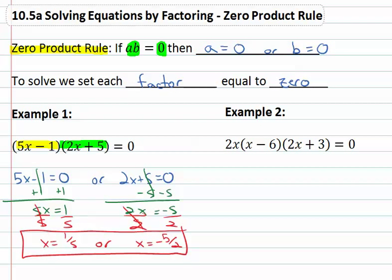Let's try another example. In this second example we have 2x(x-6)(2x+3). We've got three factors here: the 2x is a factor, the x-6 is a factor, and 2x+3 is a factor. Factors are things multiplied together.